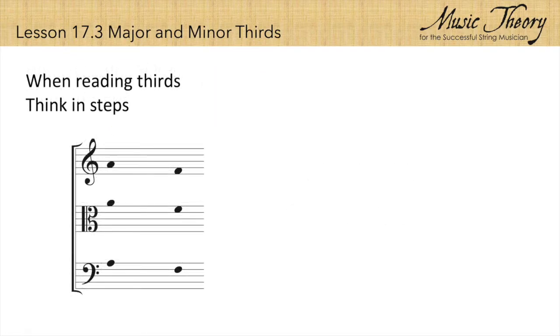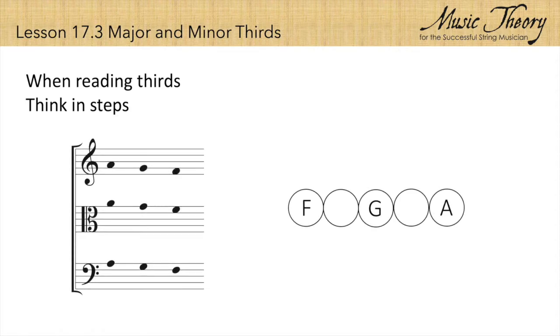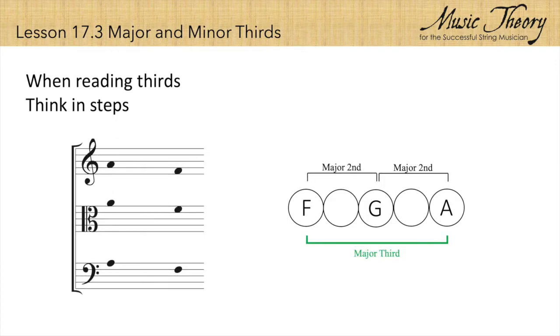Let's try an example going down a third from A down to F. First we think in steps. A down to G is a major second. G down to F is a major second. So the interval from A down to F is a major third.